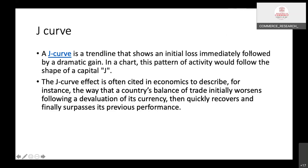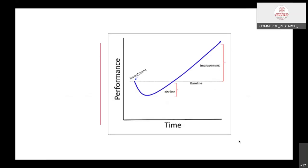J-Curve looks like this. This is called J-Curve. The x-axis shows the time and the y-axis shows the performance. The curve looks like the capital letter J, and we can see that the investment declined from baseline before improving in performance.